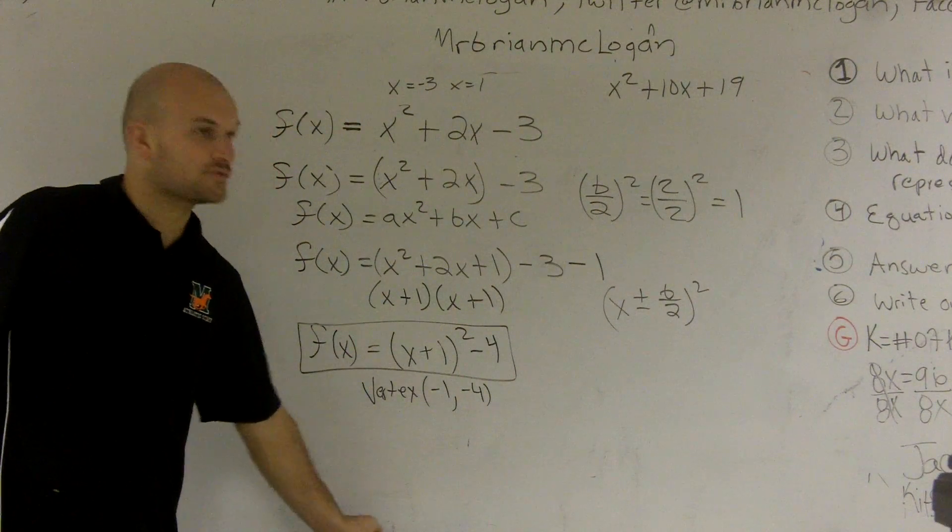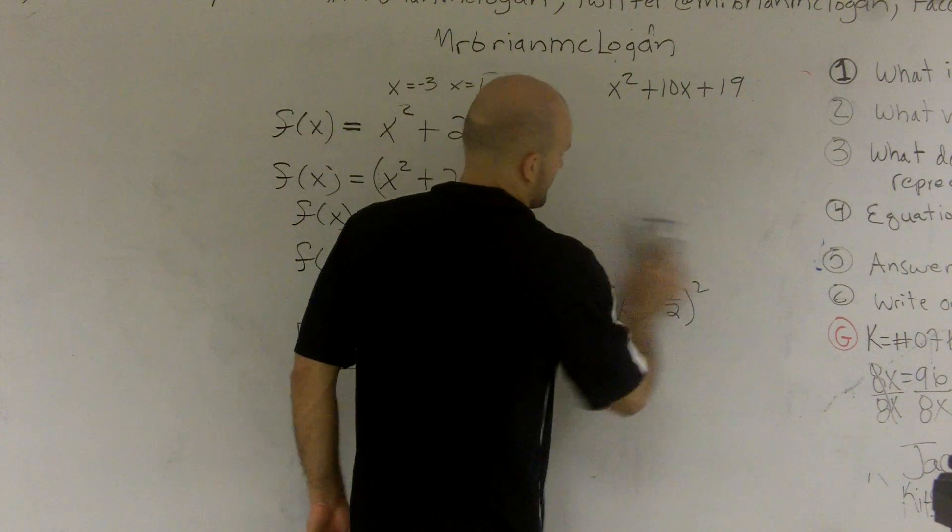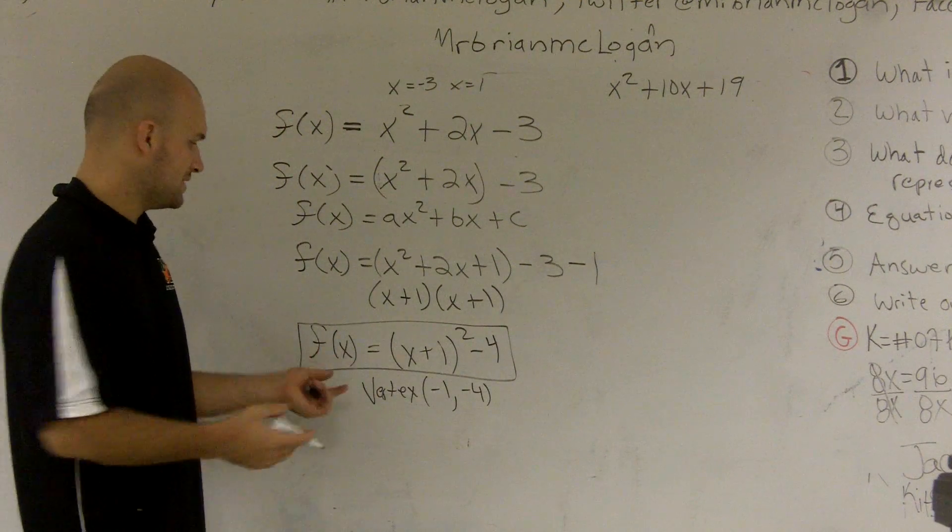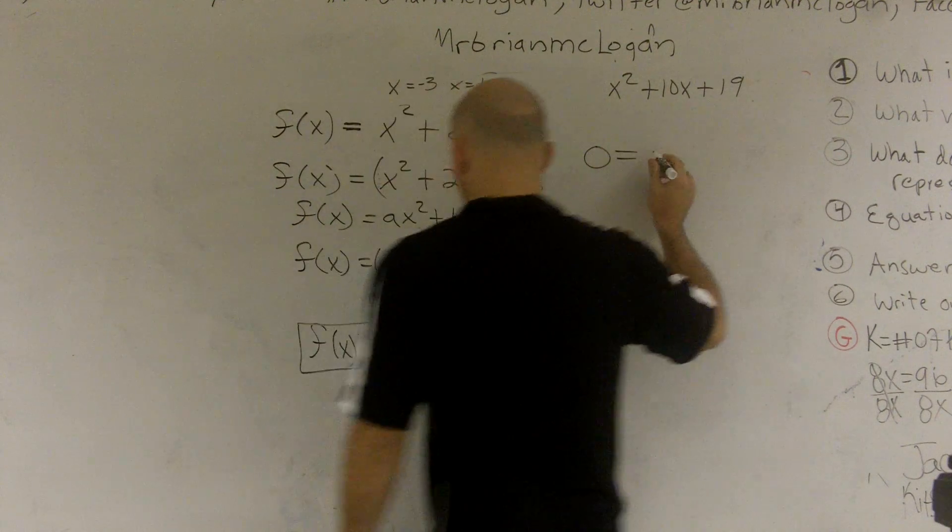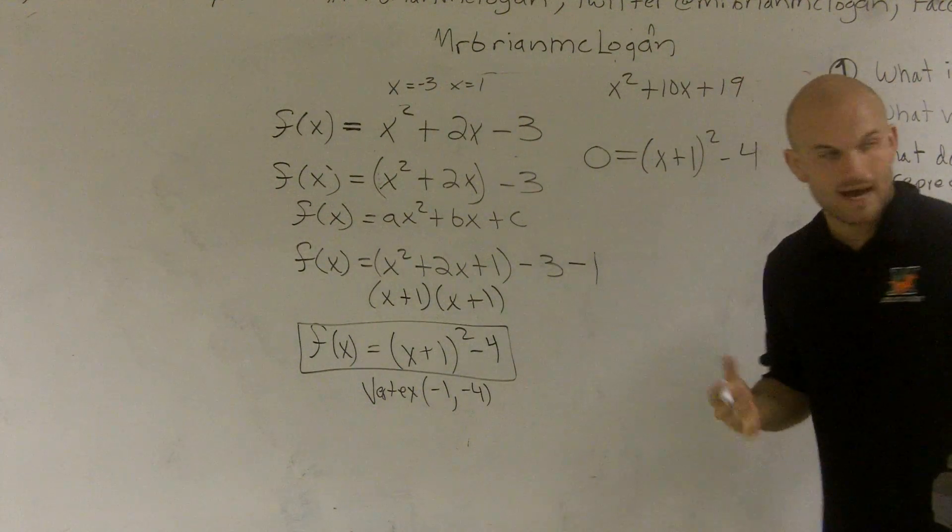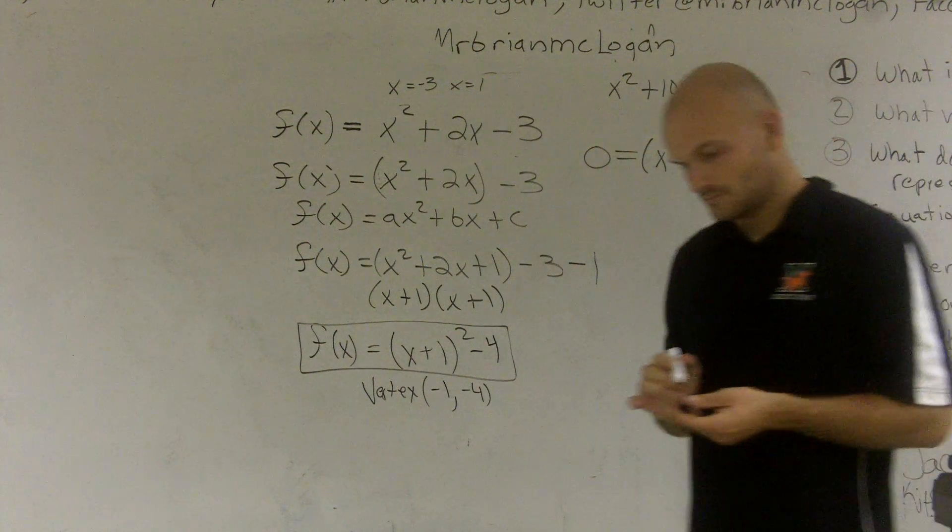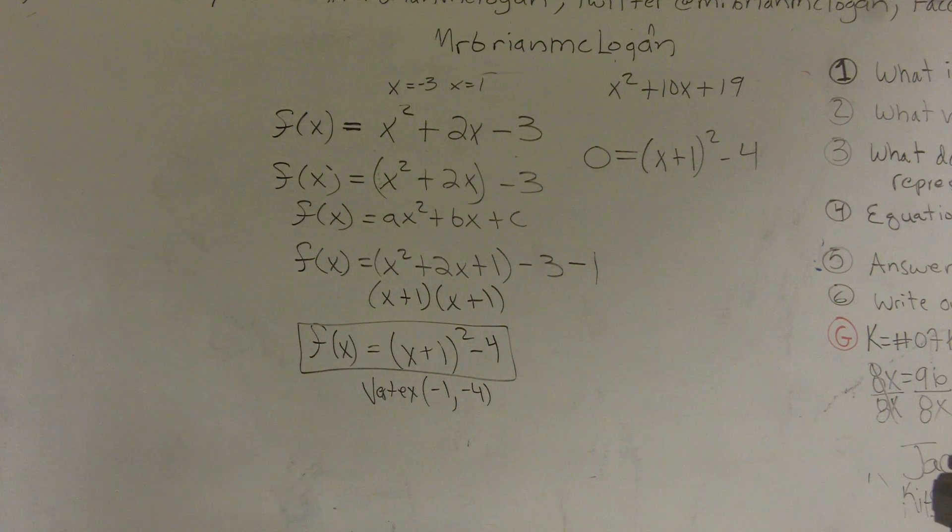The other thing that's really helpful about this is it's really easy to find your zeros or your x-intercepts. So if I wanted to find the zeros, what I need to do is I need to put my output value at zero. So I'd say zero equals x plus 1 squared minus 4. And now what I need to do is I can solve for x. I'll let you finish writing just a little bit.